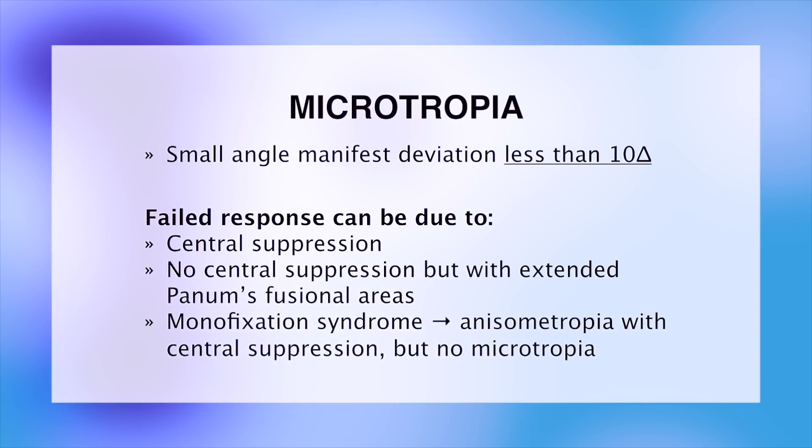A microtropia is a small angle manifest deviation of less than 10 prism diopters which is why it is easy to miss on cover test.